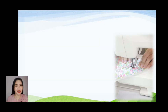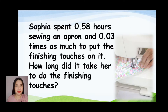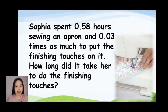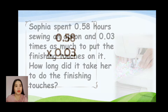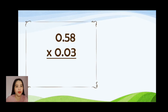More about our lesson, we have here a word problem. Sophia spent 5.800 hours sewing an apron and 0.300 times as much to put the finishing touches on it. How long did it take her to do the finishing touches? To solve the word problem, we need to multiply numbers with two decimal places.